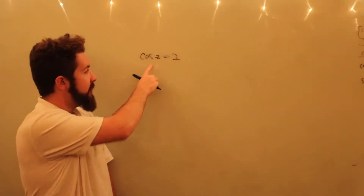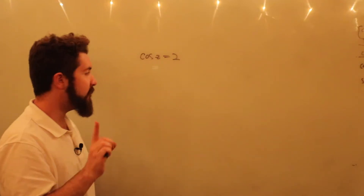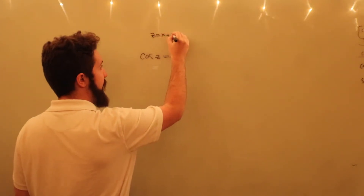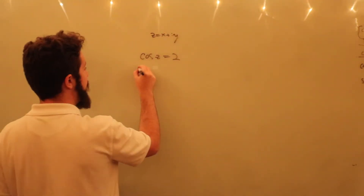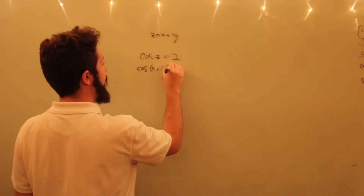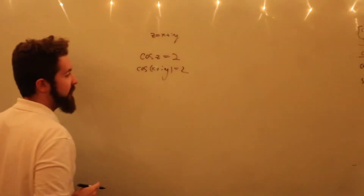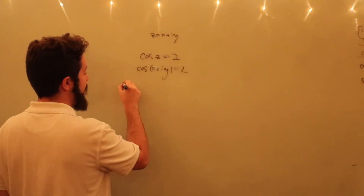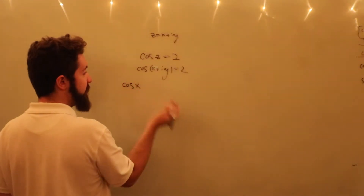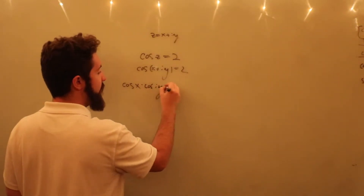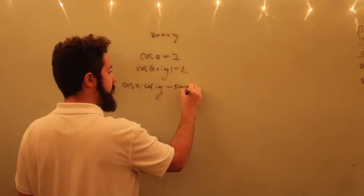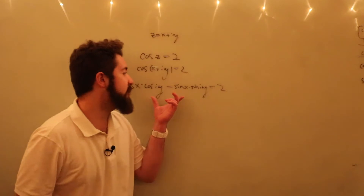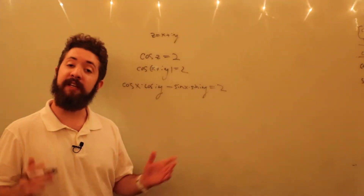So if we want to solve for z in cosine of z equals 2, the first thing we can do is say z is a complex number, so z is equal to x plus iy for real x and y. So cosine of (x + iy) equals 2. There are trig identities that say this is going to be equal to cosine of x times cosine of iy, minus the sine of x times the sine of iy, and that's all equal to 2. And yes, those trig identities still hold for complex numbers.